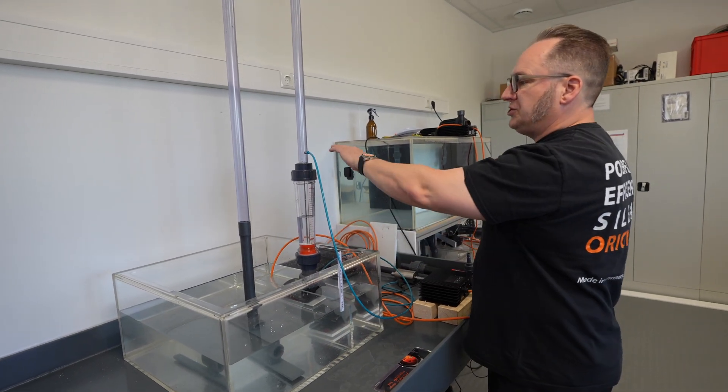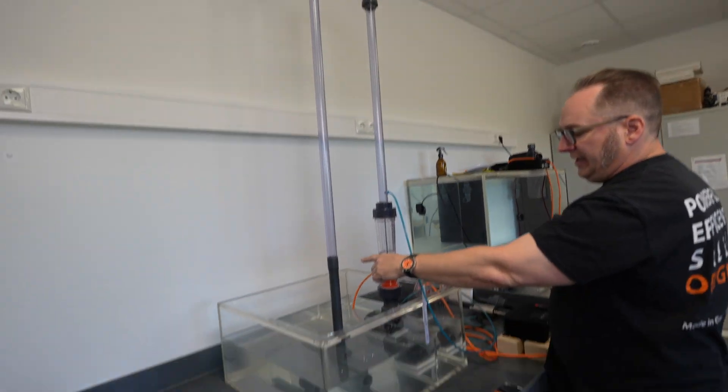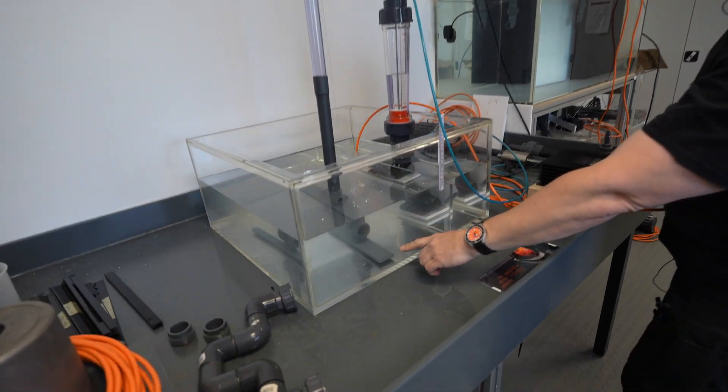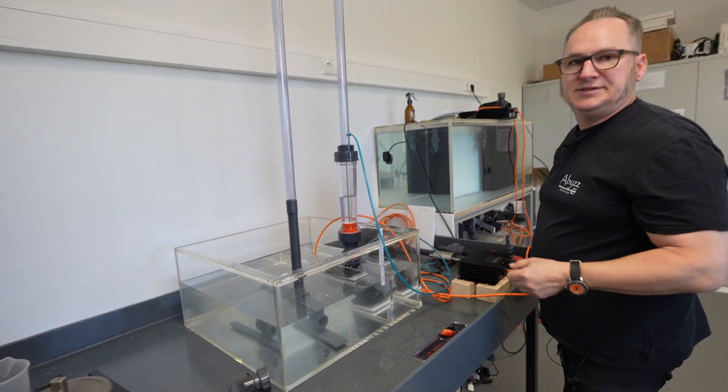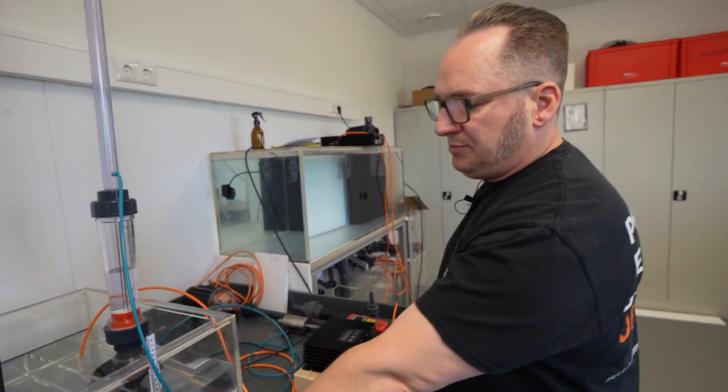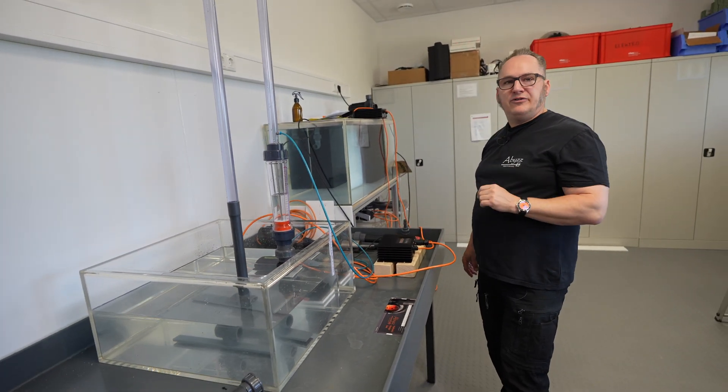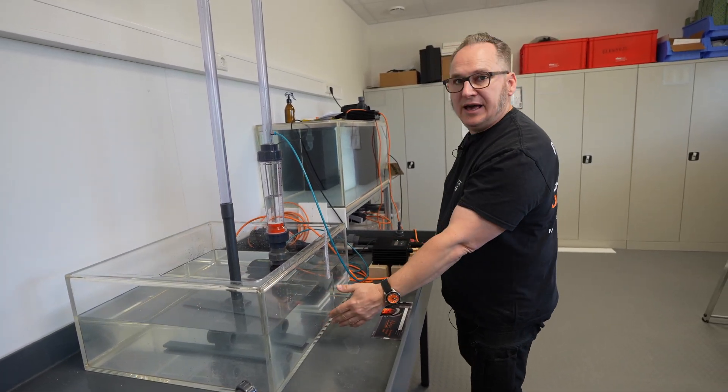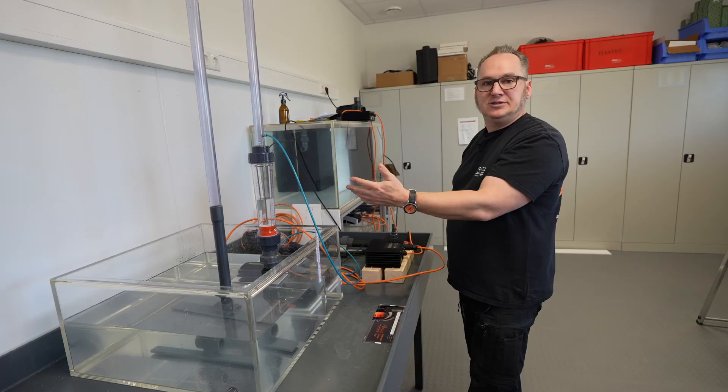So the pump actually has to work against the pressure of the water level right here. It has to build up enough pressure to push out the air into the water column, which is roughly 15 centimeters. So it needs at this point 0.015 bars to press the air out and that pressure needs to be generated.